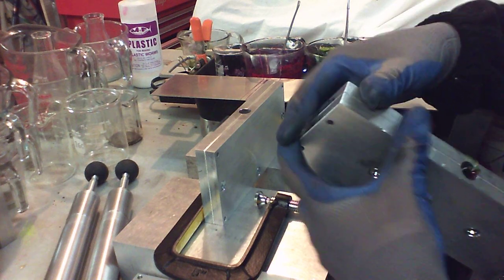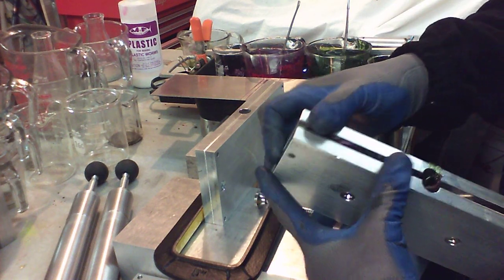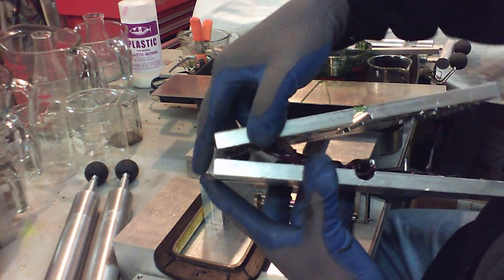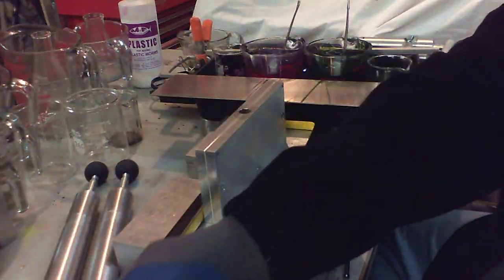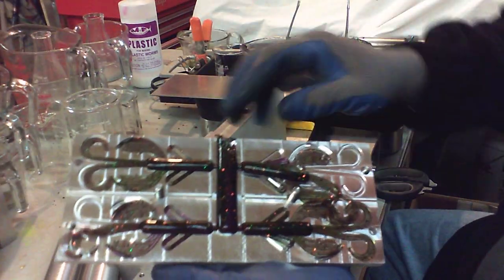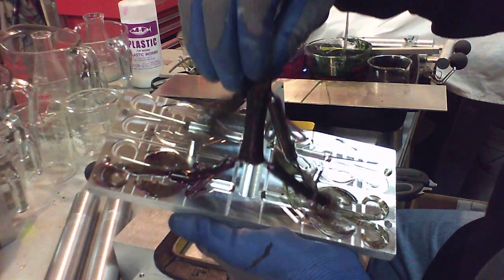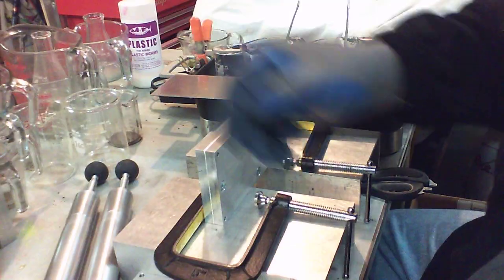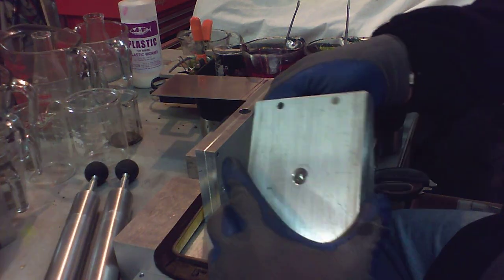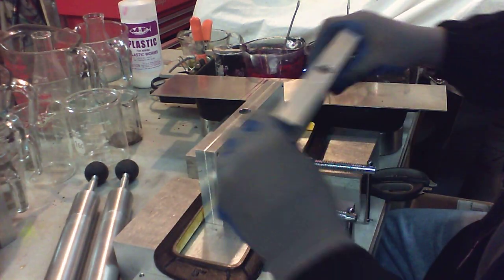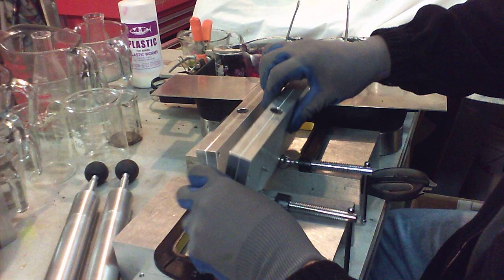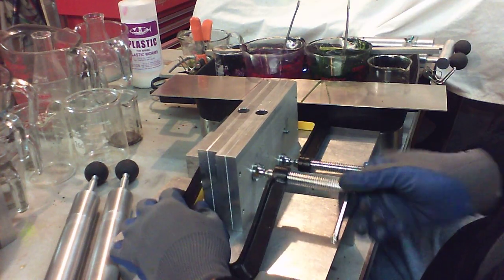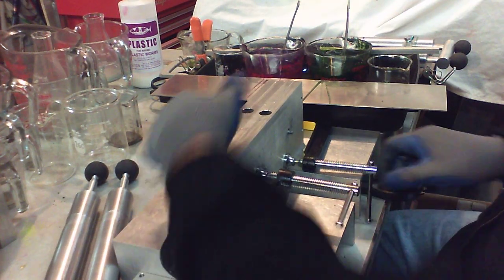Take the other one and do the same thing. Got the green on that side and the purple on the other. Set that aside. Put my mold back together. Set it back up. Lift up my clamps. Clamp again. Clamp again.